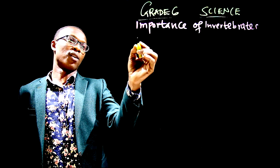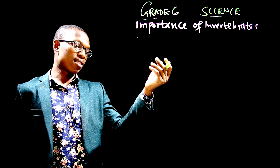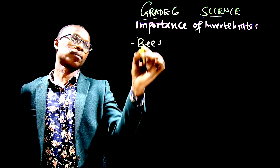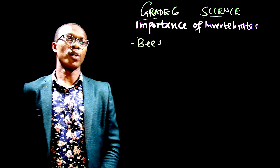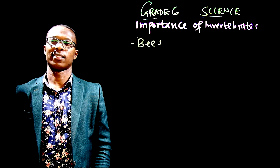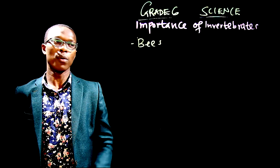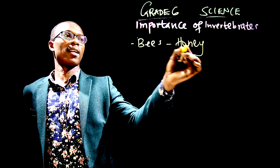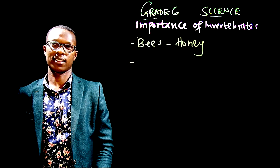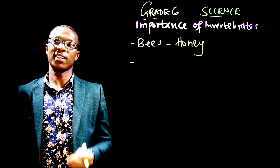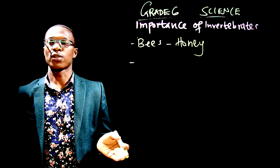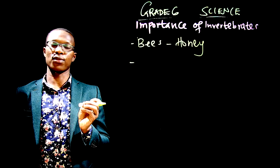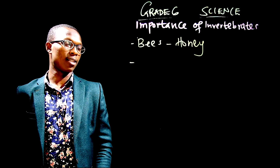One of the insects we have are bees. Now, what do we get from bees? I'm sure you know what we get from bees. Bees normally provide us with honey — that honey that you normally use to spread on your bread or to eat whenever you feel like you want something sweet, that comes from the bee.